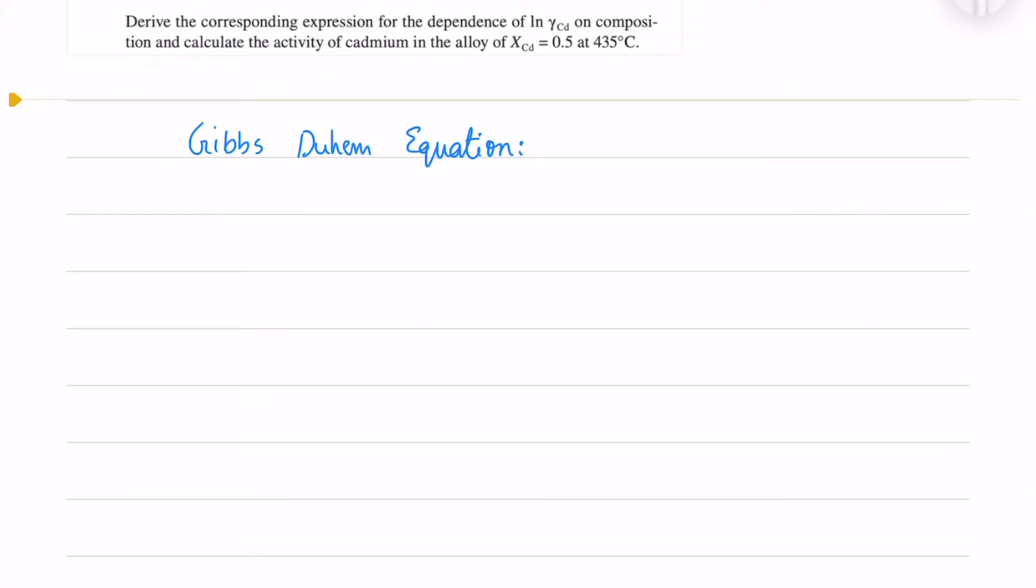In the 9.10 question we are given the activity coefficient of zinc and we need to find the activity coefficient of cadmium and the activity of cadmium.